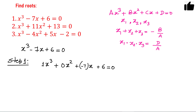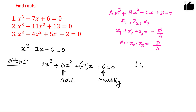The next step is to find three numbers whose product is six and whose sum is zero. To find these numbers, we look at the factors of six. Six is divisible by plus or minus one, plus or minus two, and plus or minus three.